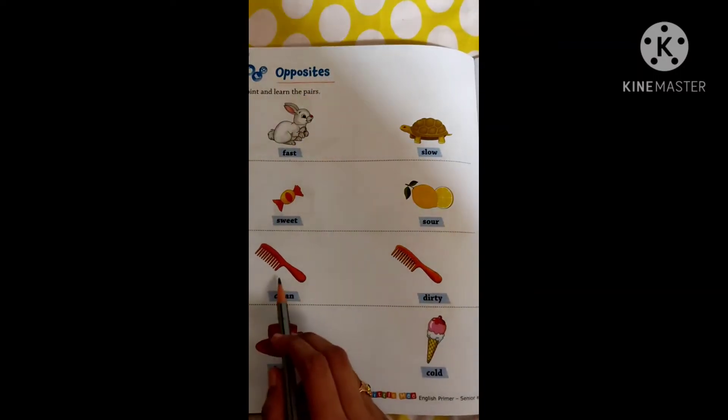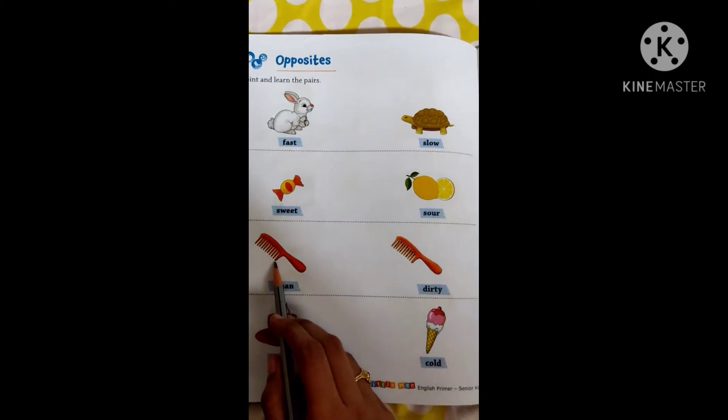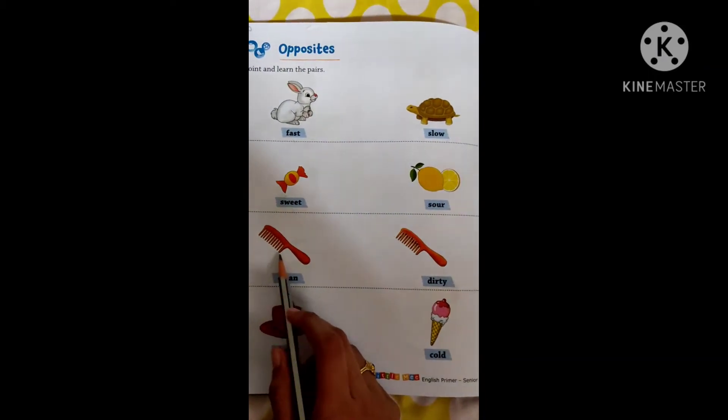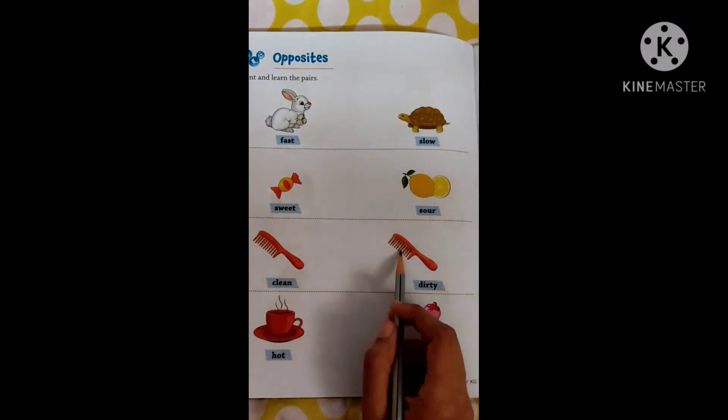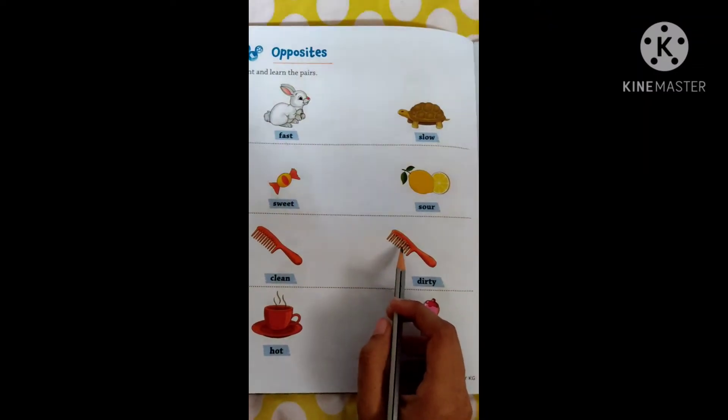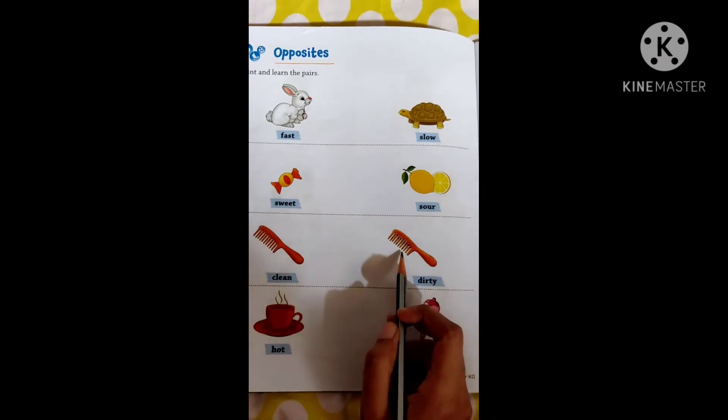Clean, dirty. You can see this comb, it is very clean. But when you newly buy the comb, that is very clean. And now you can see when you use it very much and you don't clean it, it becomes dirty. The opposite.